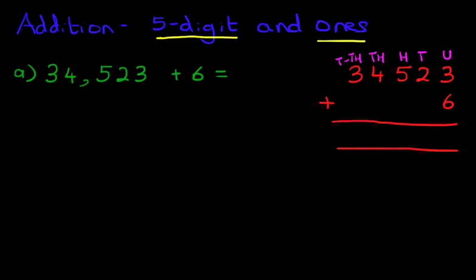And as always we start with the column on the right hand side first. That's the units column. Three plus six. So what is three plus six? The answer is nine. Next we do the tens. We've got two plus zero. There's nothing there. So that remains two.